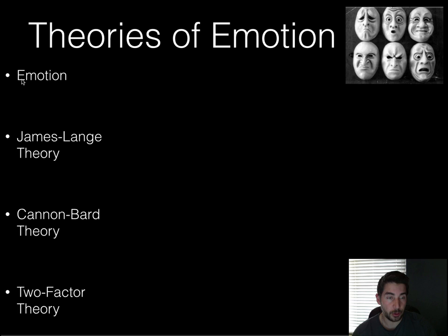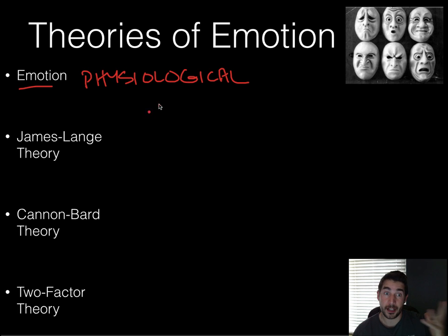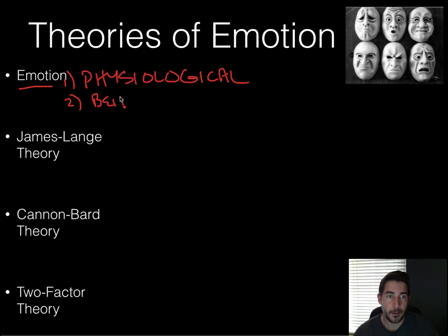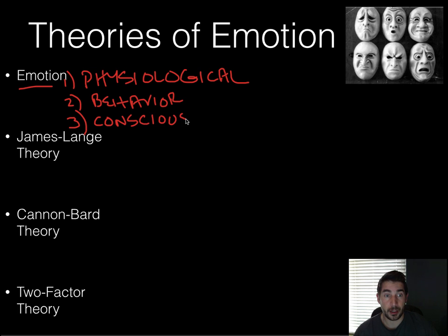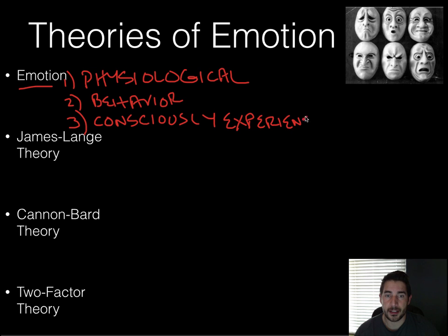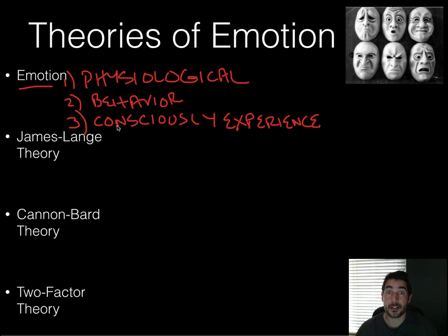First of all, what is emotion? Emotion has three parts to it. It has a physiological response — that means increased heart rate, perspiration, dilated eyes, some sort of a physiological response. It has some sort of expressive behavior, so you have to do something, act in some way. And then you also have to consciously experience it. So emotion has these three things. If you're missing one of them, you're not technically experiencing an emotion. Your heart racing fast and you don't know why — that's not an emotion. But your heart racing fast and you being upset about it and understanding that — that's an emotion.